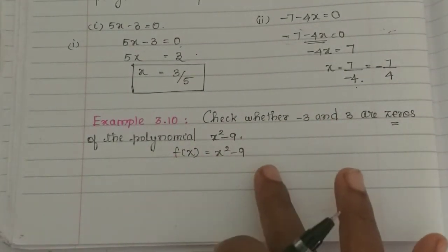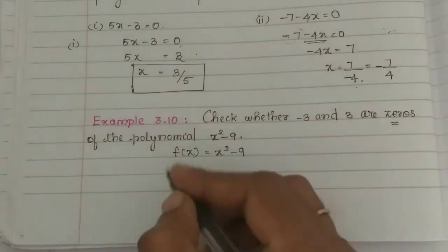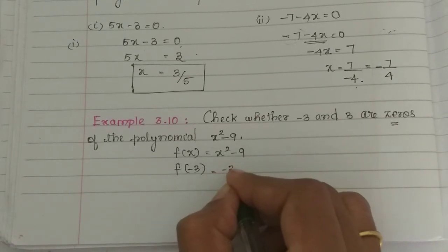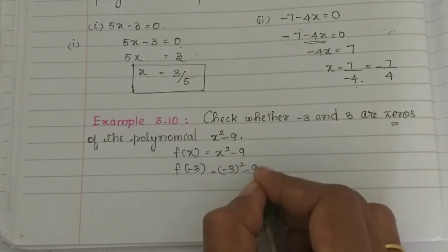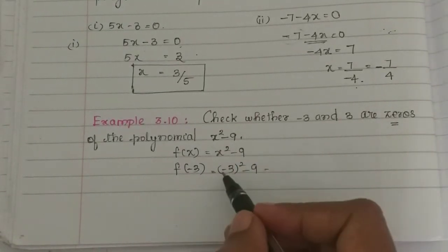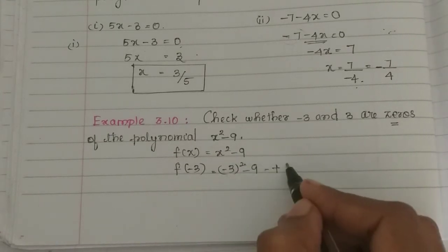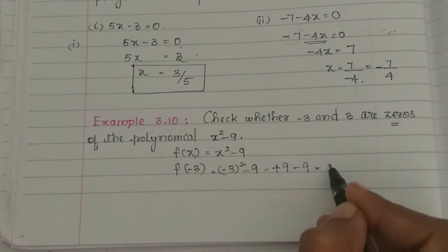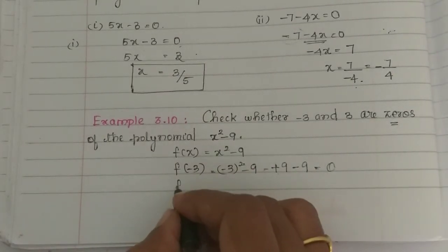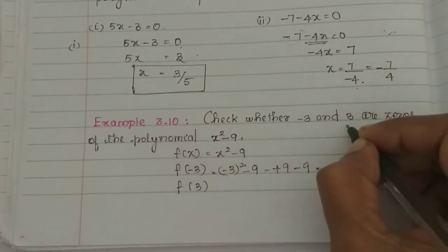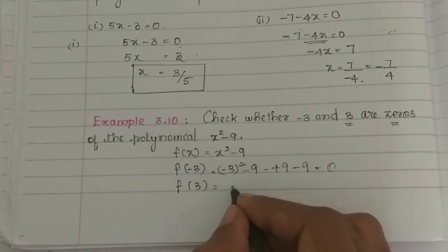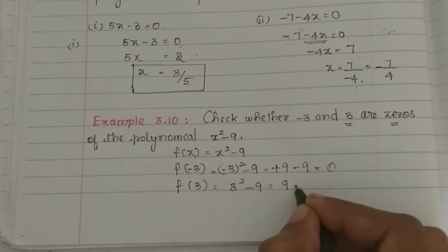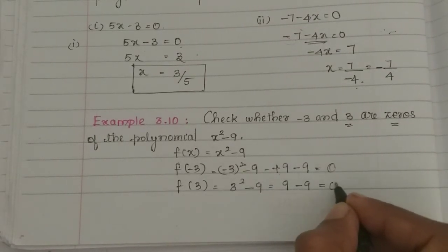We can pick these values and check in the polynomial. f of minus 3 equals minus 3 whole square minus 9. Minus 3 squared is plus 9, so 9 minus 9 equals 0. Then f of 3 equals 3 squared minus 9, which is plus 9 minus 9, equal to 0.